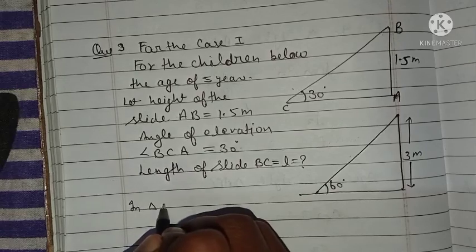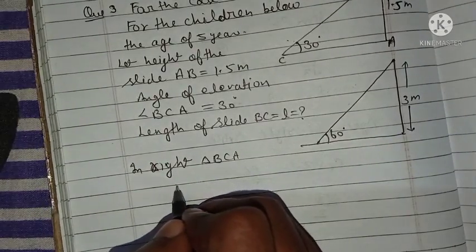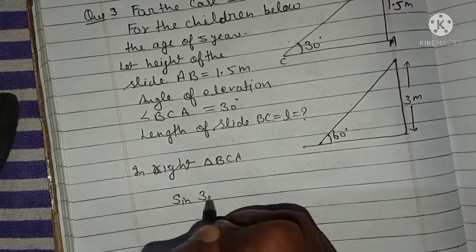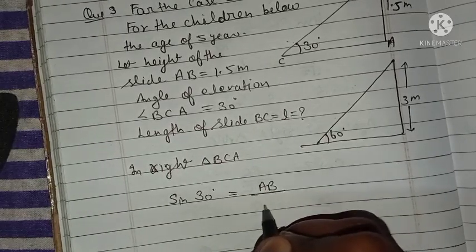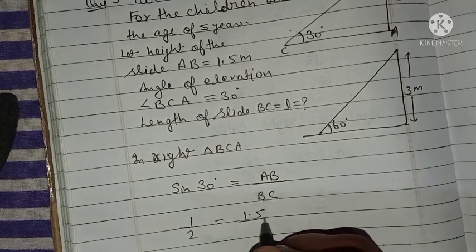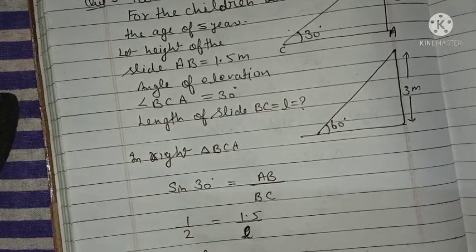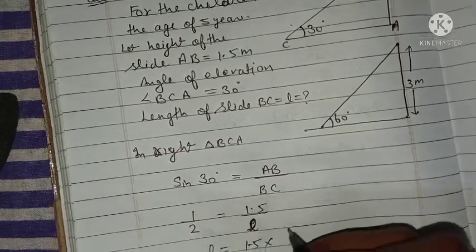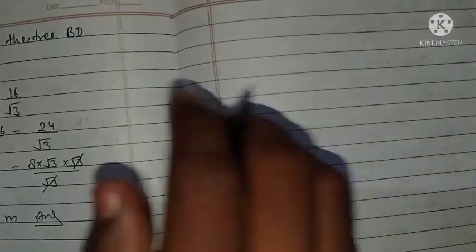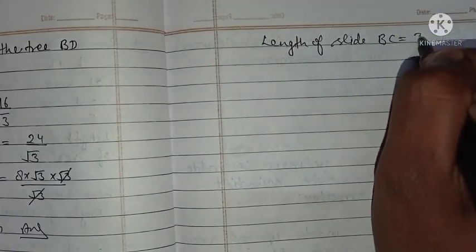In right triangle BCA, sin 30 degrees equals perpendicular AB upon hypotenuse BC. Value of sin 30 is 1 by 2. AB is 1.5 meters and BC is L. So L equals 1.5 times 2, which equals 3 meters. Length of slide BC equals 3 meters.